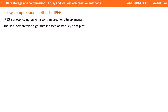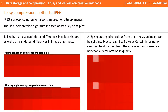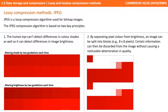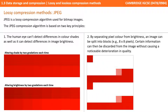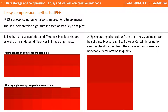Switching to images, we can consider JPEG, which is a common lossy technique. It's used for compressing bitmap images and the compression algorithm is based on two key principles. First, the human eye can't detect differences in colour shades as well as it can detect differences in image brightness. By separating pixel colour from brightness, an image can be split into blocks, for example 8x8. Certain information can then be discarded from the image without causing a noticeable deterioration in quality.